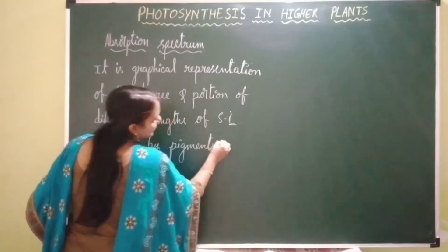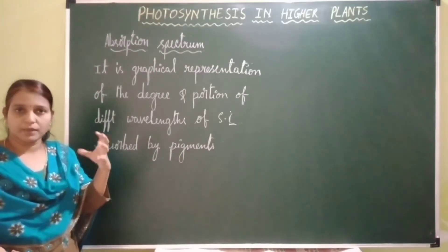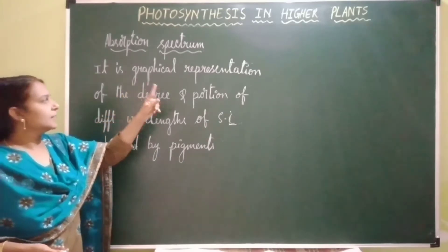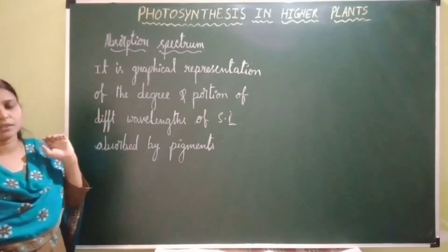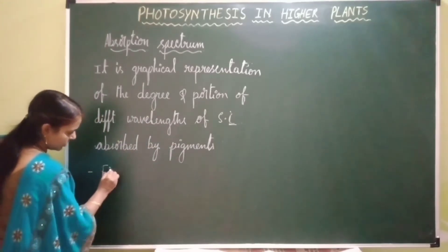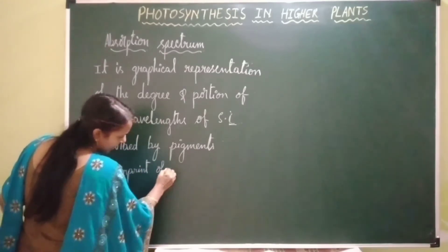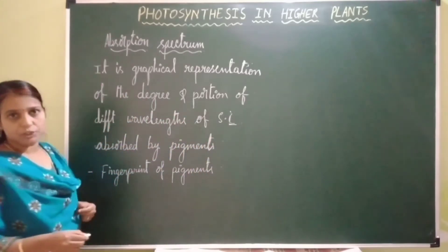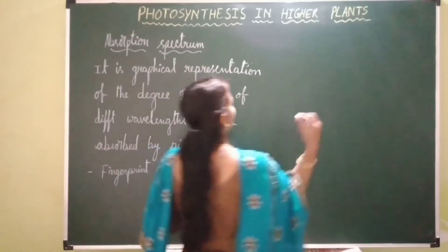So what we are studying here is absorption of different wavelengths of sunlight by different pigments, studied with the help of a graph. This graphical representation of the degree and portion of different wavelengths of sunlight absorbed by different pigments is called absorption spectrum. This absorption spectrum becomes the fingerprint of pigments — it helps in identification of pigments. Now let's make a graph to study the absorption of different wavelengths of sunlight by these pigments.